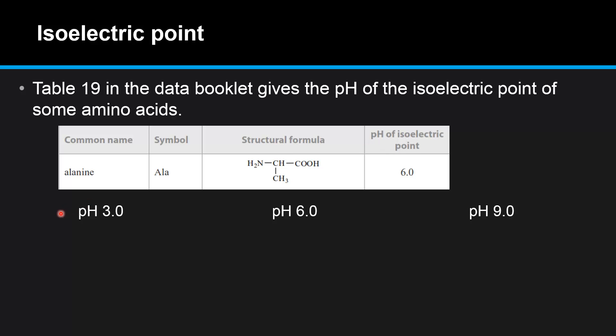So we will have a look at the structure of alanine at pH 3.0, pH 6.0 and pH 9.0.